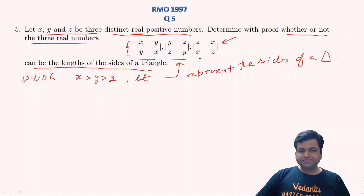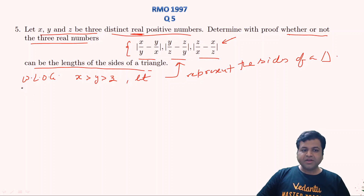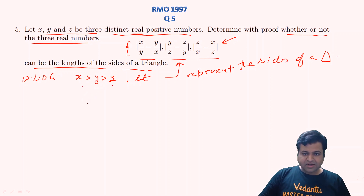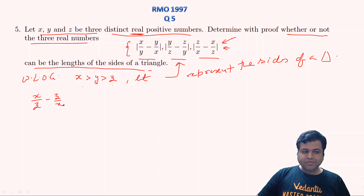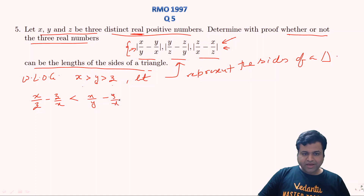If we come to a contradiction, we can say these will not represent the sides of a triangle; if we come to a truth, we say they will. If these three positive numbers are the sides of a triangle, they must satisfy the triangle inequality, which states that the sum of any two sides is always greater than the third. Since x > y > z, the largest side will be |x/z − z/x|, and this should be less than the sum of the other two: |x/y − y/x| + |y/z − z/y|.